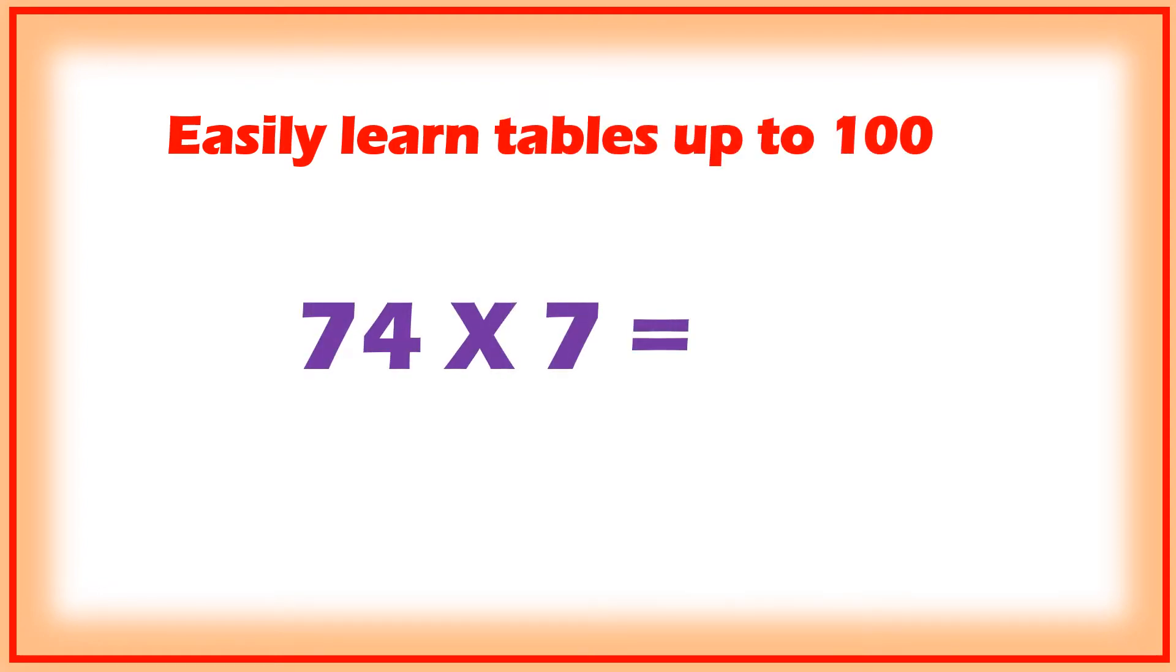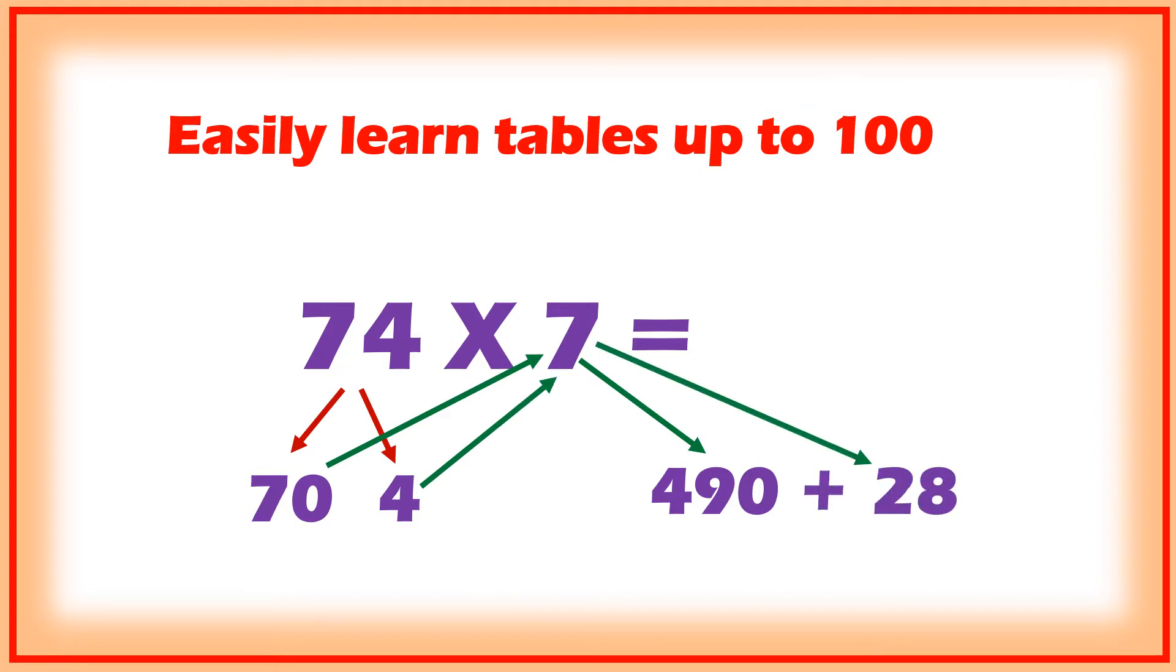Another example: 74 into 7. That is 70 and 4. 7 sevens are 49, add zero - 490, plus 4 sevens are 28. 490 plus 28, that is equal to 518.